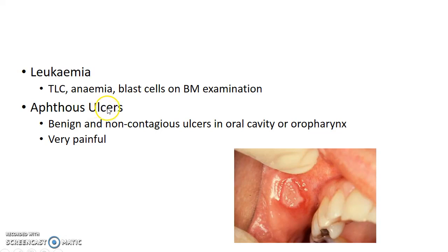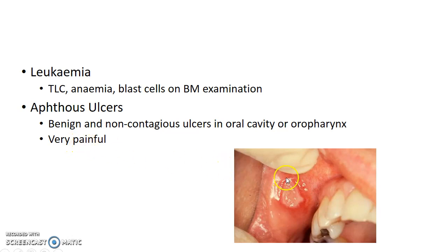Aphthous ulcers can also present with formation of membrane over tonsil. Aphthous ulcers are benign and non-contagious ulcers in the oral cavity or oropharynx, and they are very painful. This picture shows an aphthous ulcer in the oral cavity. If this type of ulcer occurs in the tonsil, it can lead to formation of membrane over tonsil.